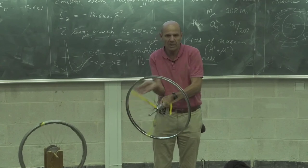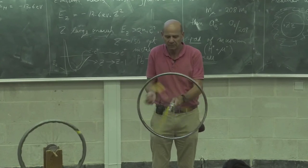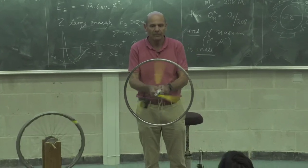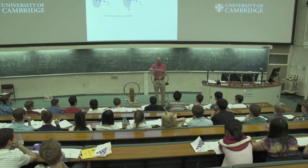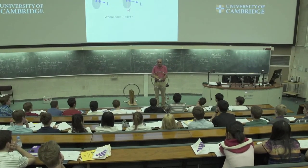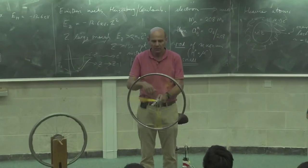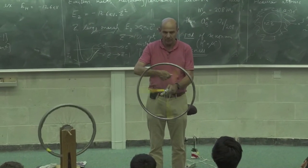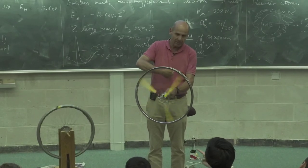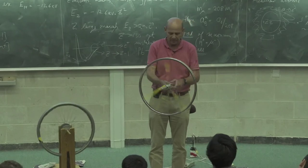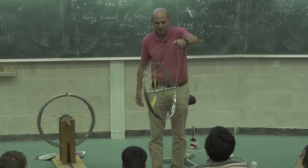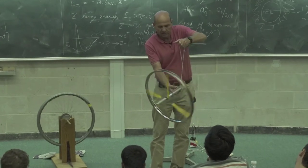I can spin this the other way. The angular momentum is now pointing where? To me. The torque, when I pull with this cotton, will be... The angular momentum was this way. The torque is that way. So the angular momentum pointing to me must move around like that. So let's see if that's the case. Indeed it is. Sorry, it's getting a bit tired. There's a bit of friction in there.